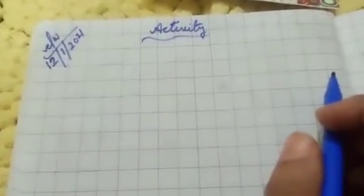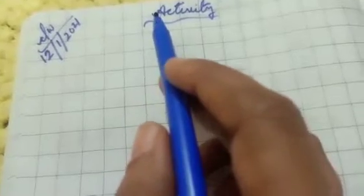And then you write here activity: A-C-T-I-V-I-T-Y, activity.